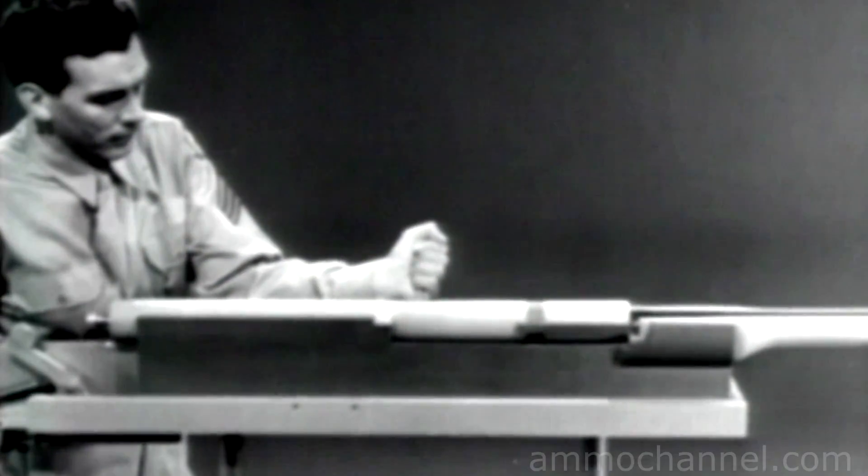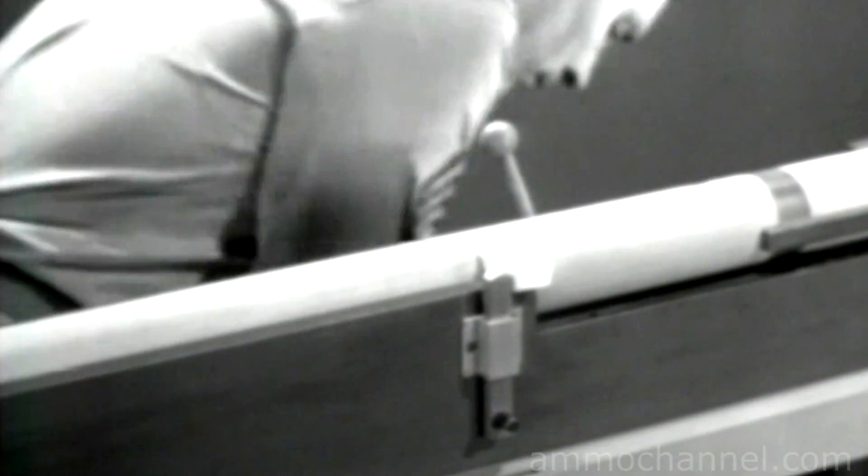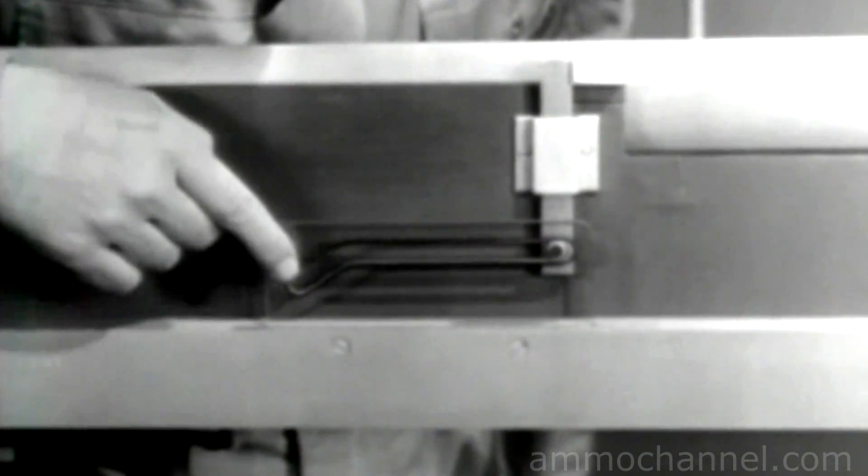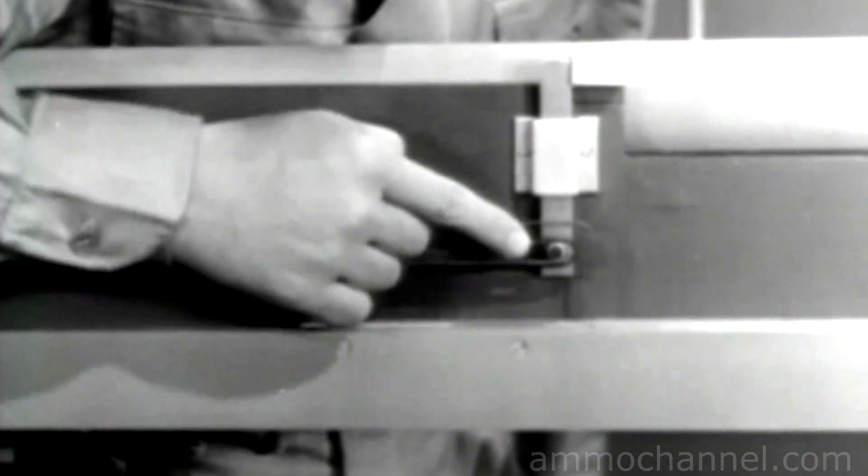Now the trick is to use this rearward movement to unlock and open the bolt. Let's first lengthen the locking lug to make it extend beyond the barrel extension and attach a catch. Now, to unlock the bolt, we need some way of pulling this catch down. This cam will do the job. It has a camming slot which fits over this lug on the catch. The cam is fastened to the stationary receiver.